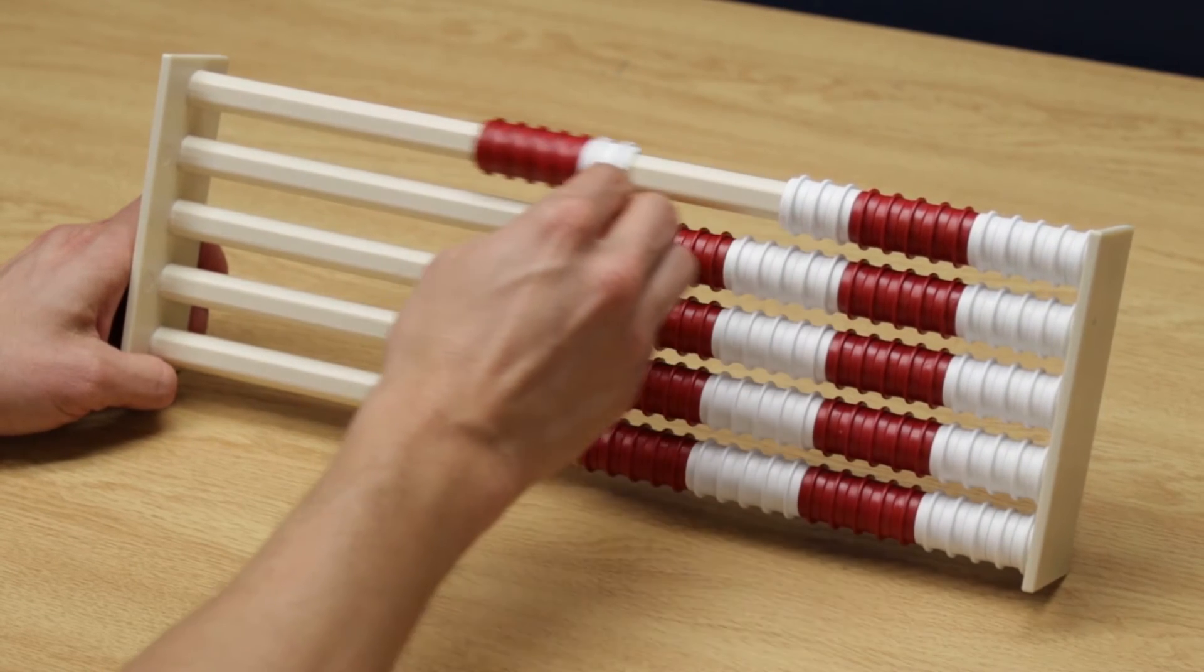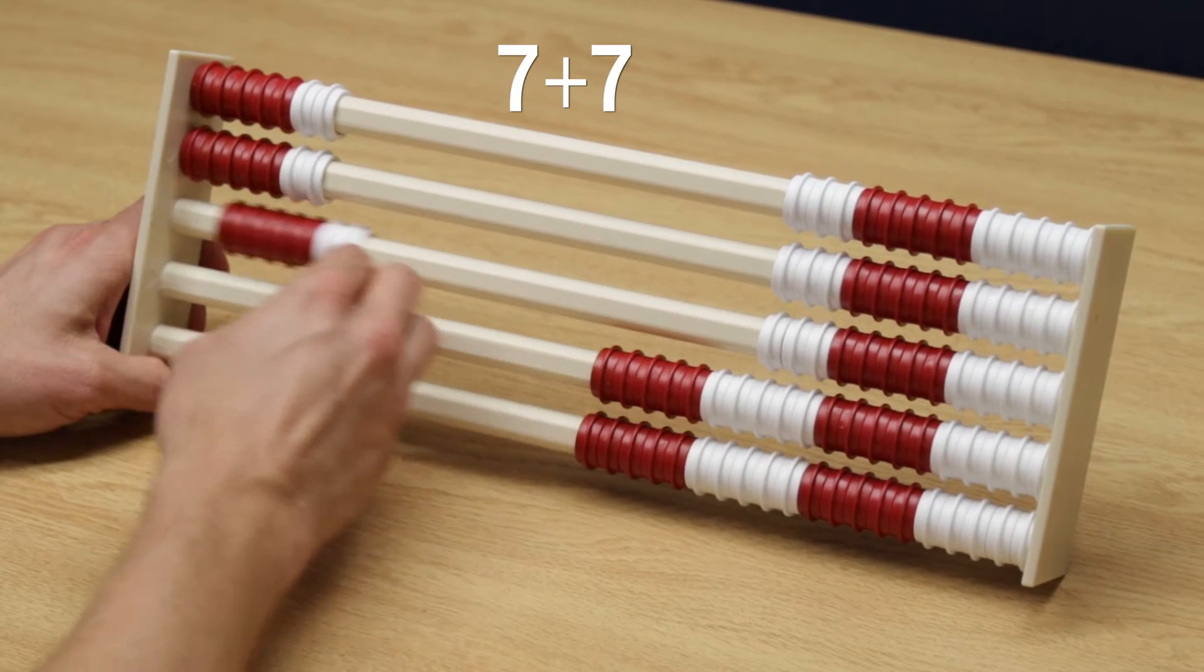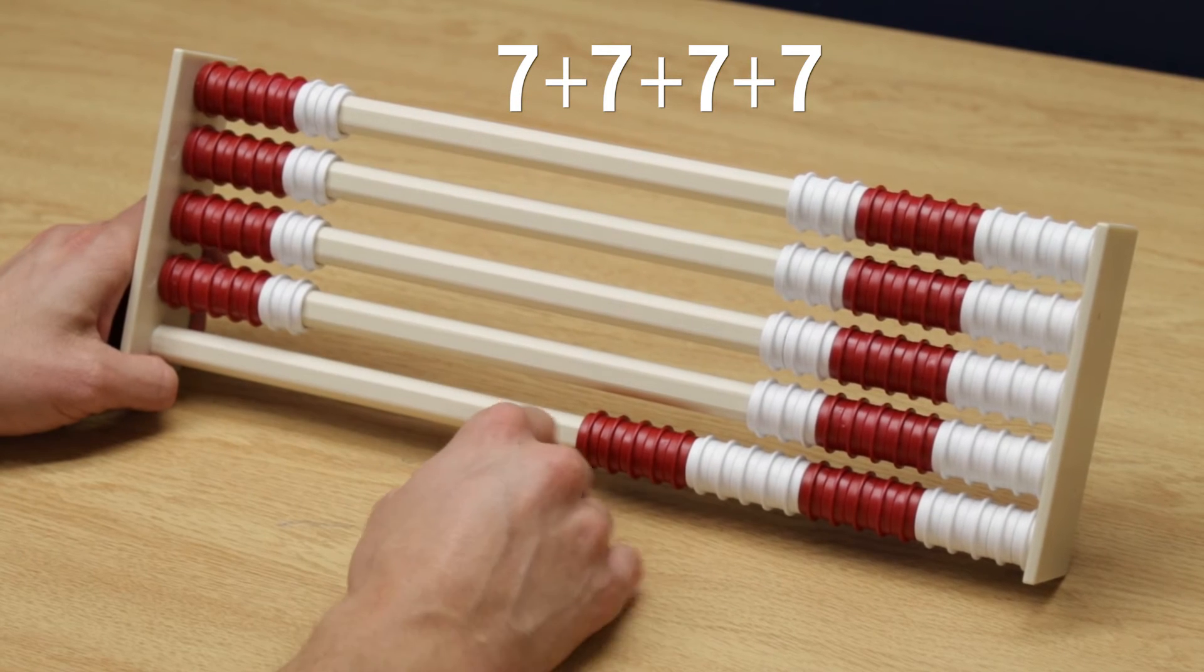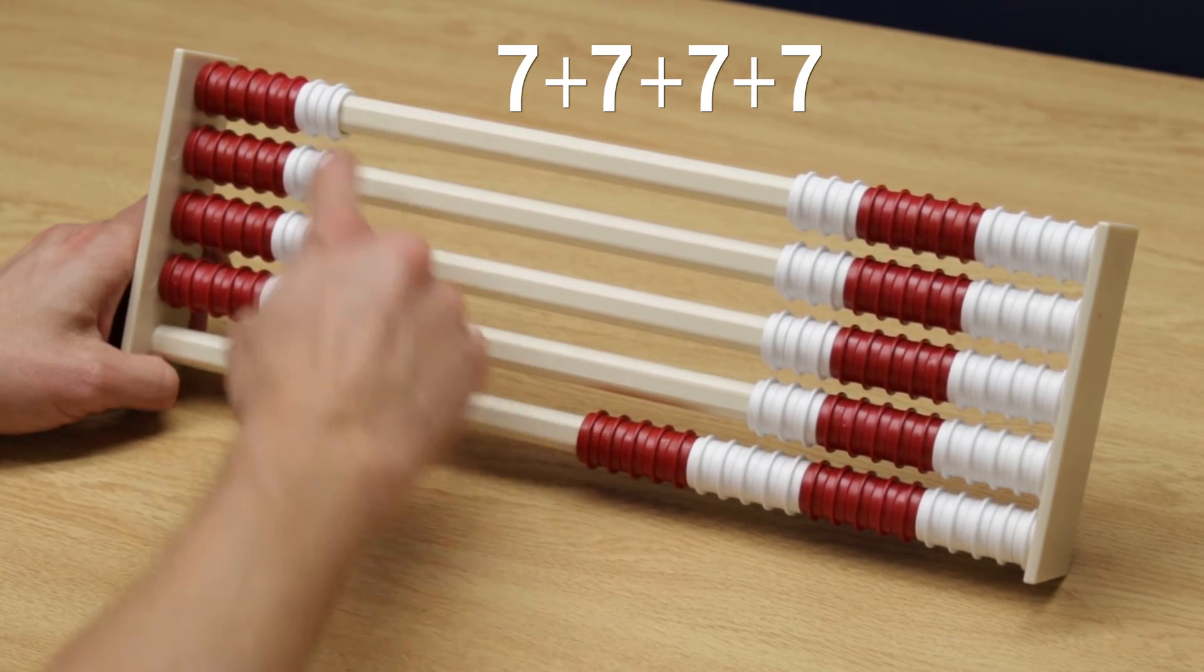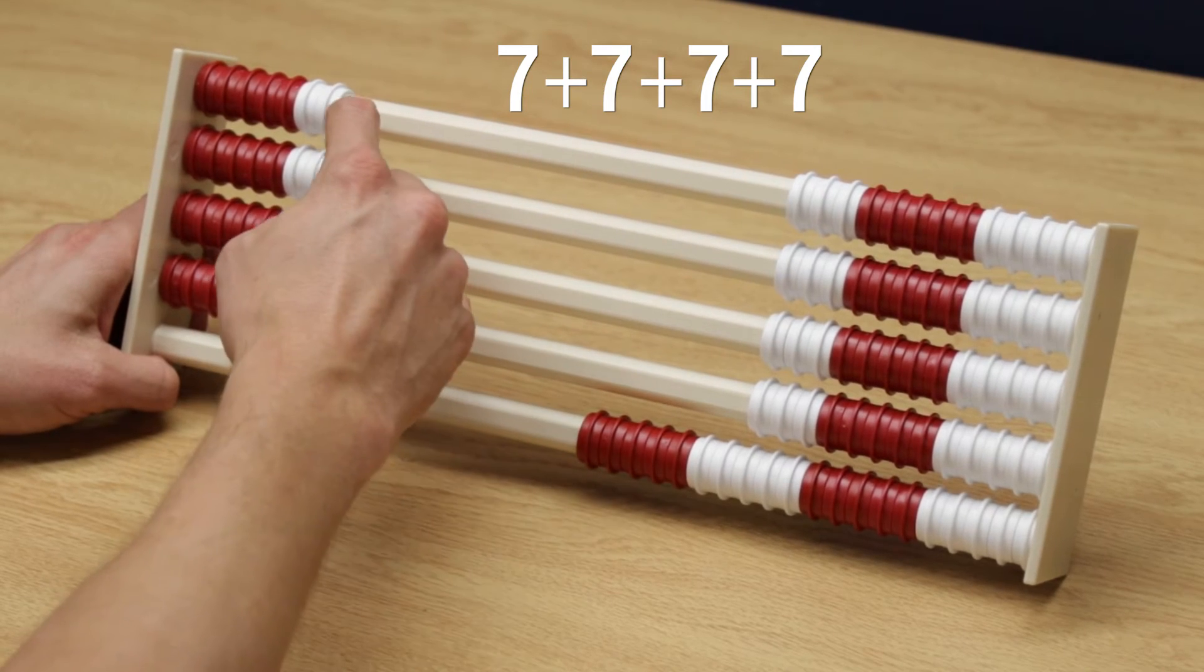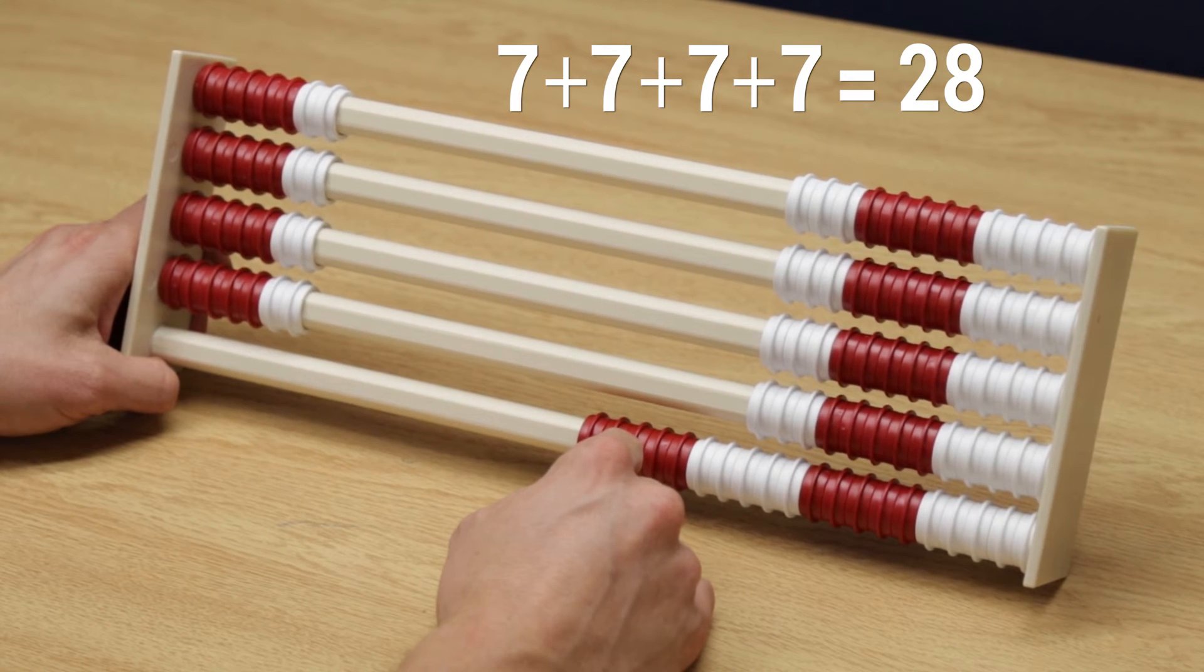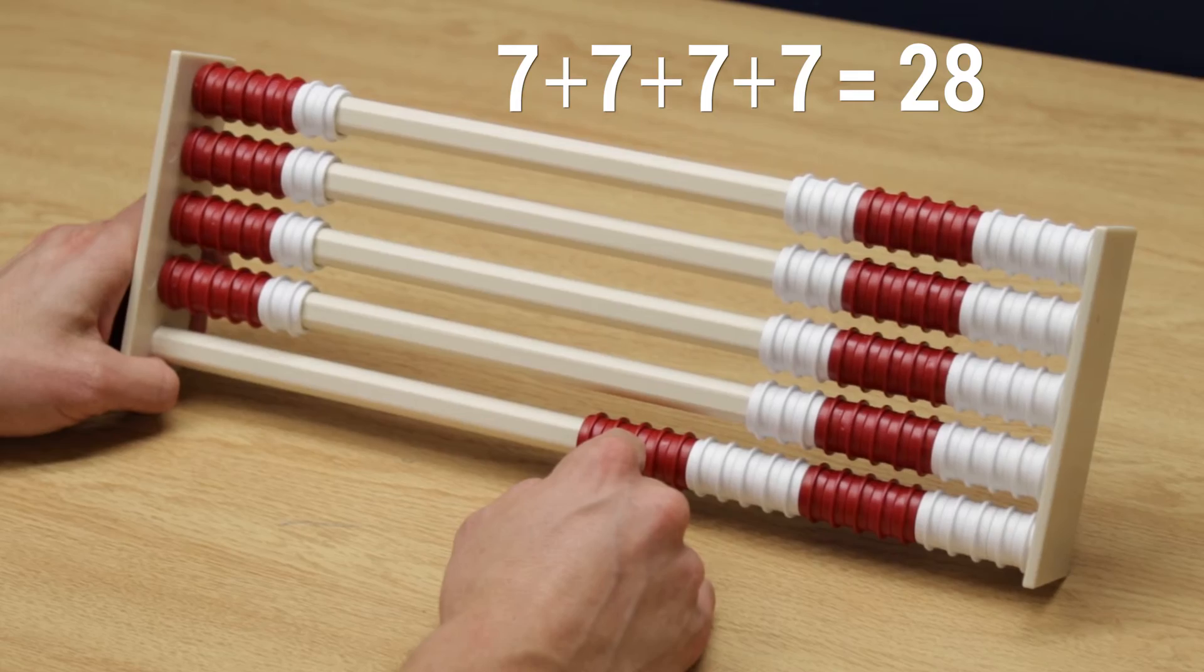A student could build one group of 7, two groups of 7, three groups of 7, four groups of 7. When we look at our sum, we recompose our two 10s to get 10, 20, 22, 24, 26, and 28. We can see all those partial products come together to get the product 28.